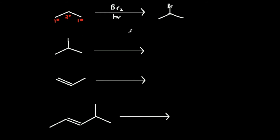This would actually be tert-butane. Using bromine and light, I'm going to brominate at the highest degree position. Now I have a tertiary position in the center, so that's where I'm going to brominate. You can always have some unwanted bromination at the primary positions, but overwhelmingly the vast majority is going to be at the tertiary position. That's why radical bromination is much preferred to radical chlorination — chlorination gives a much higher mixture of products, while bromination is much more specific, particularly when you have a tertiary position.